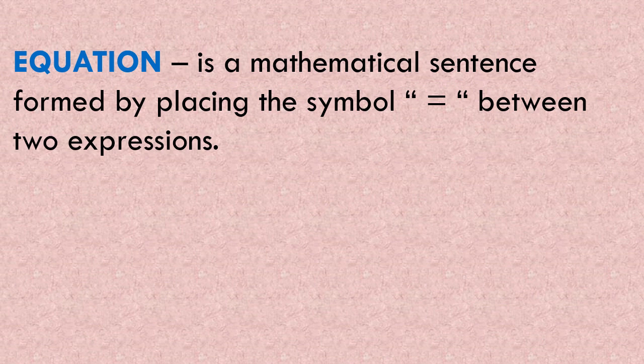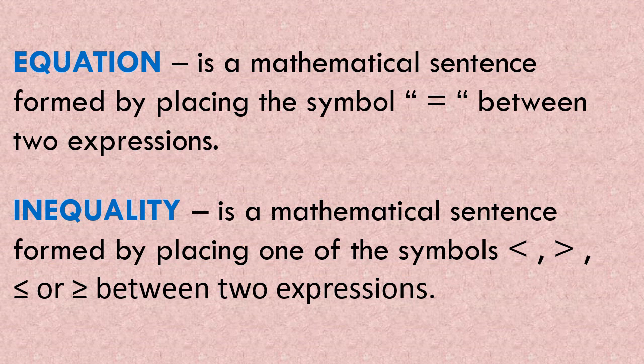An equation is a mathematical sentence formed by placing the equal symbol between two expressions. An inequality is a mathematical sentence formed by placing one of the symbols — less than, greater than, less than or equal to, or greater than or equal to — between two expressions.